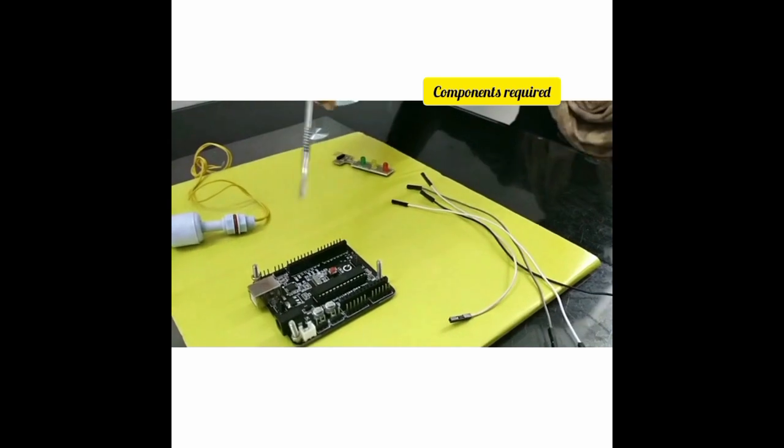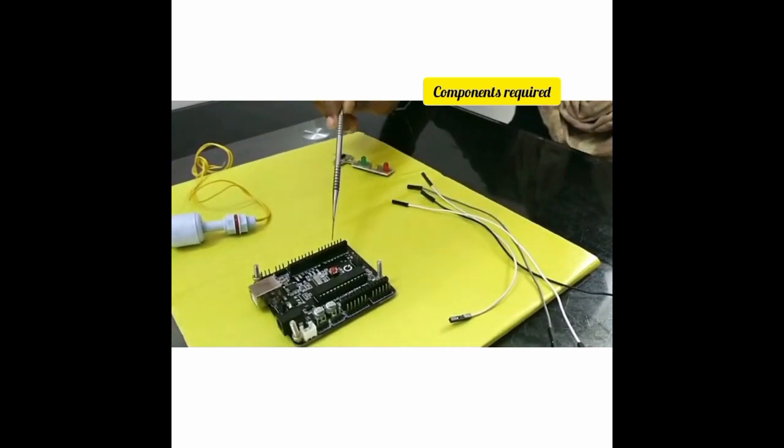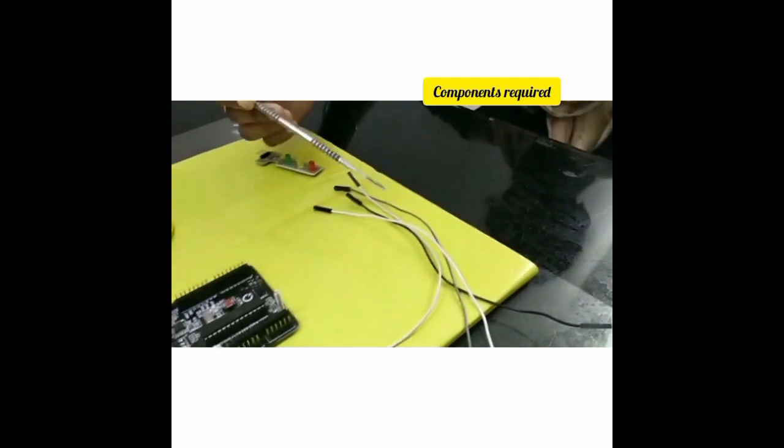In this video, we are going to see about water level indicator and how it works. The components required are Arduino UNO, water sensor, LED and jumper wires.